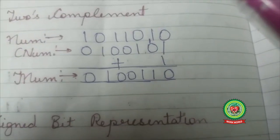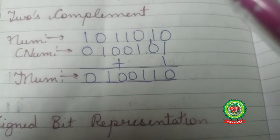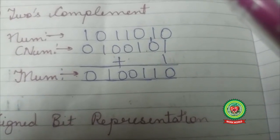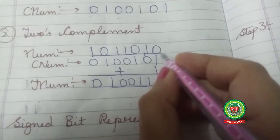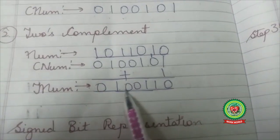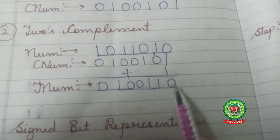1 plus 0 is 1. The rest of the numbers will be the same. So two's complement of 1 0 1 1 0 1 0 is 0 1 0 0 1 1 0.